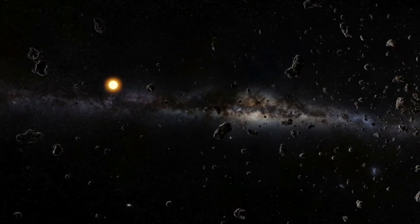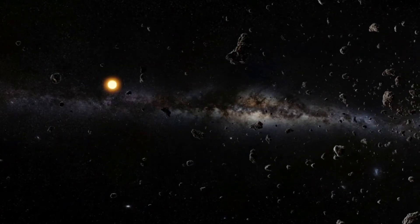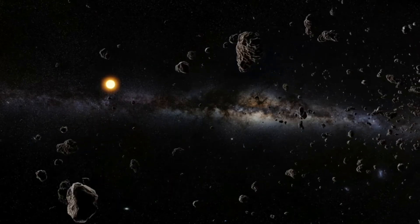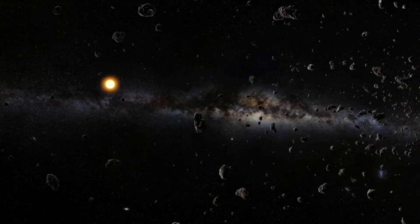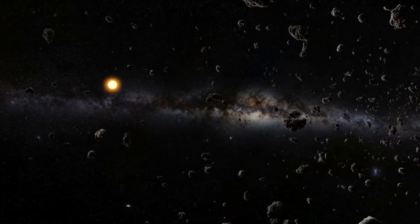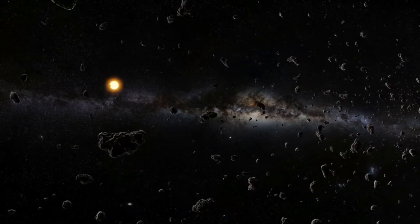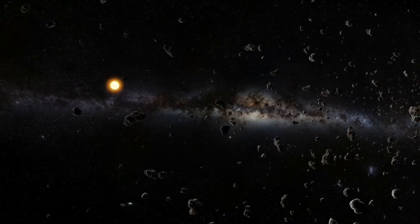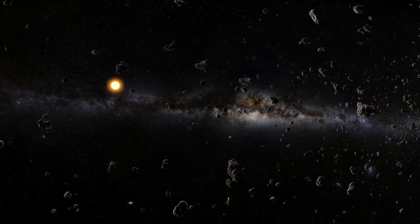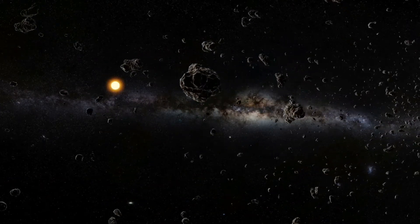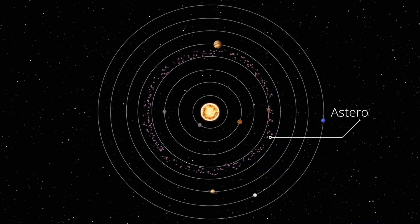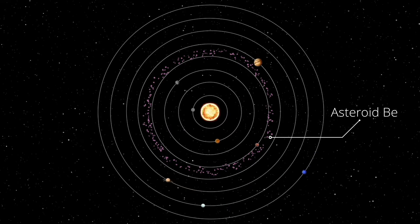Asteroids are small, rocky objects that orbit the Sun. Although asteroids orbit the Sun like planets, they are much smaller than planets. There are lots of asteroids in our solar system. Most of them are located in the main asteroid belt, a region between the orbits of Mars and Jupiter.